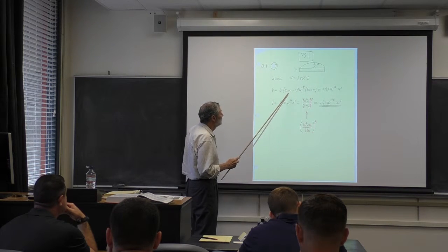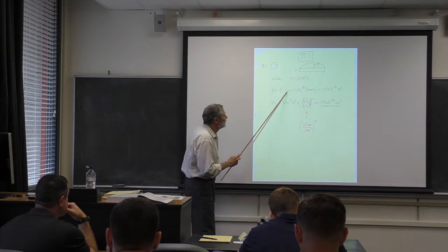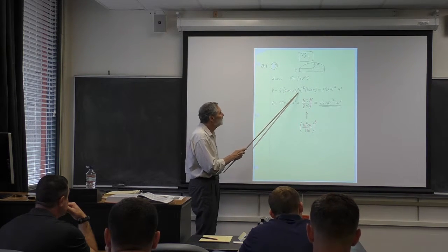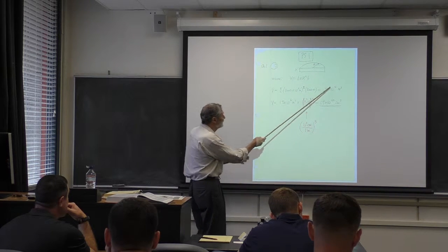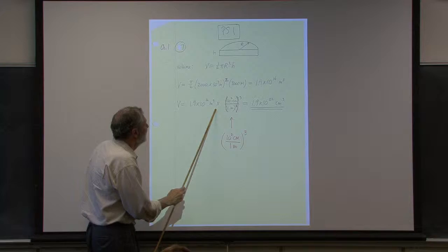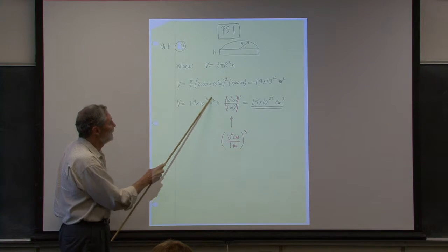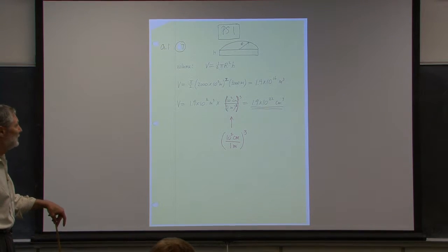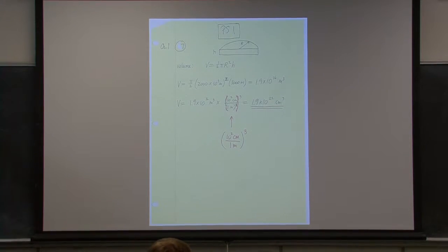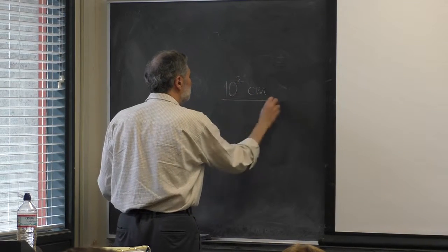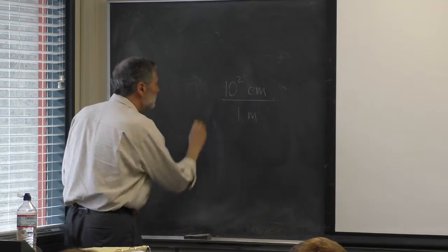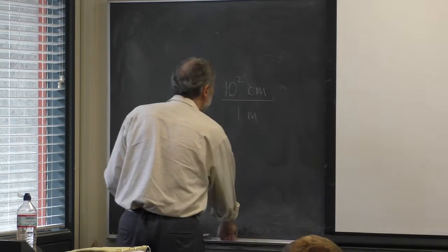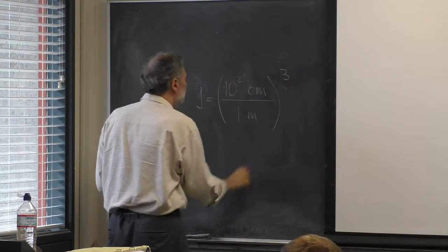Plugging in the numbers — I'm going to work in meters. The radius is 2,000 km, which is 2×10³ meters per km. The thickness is 3,000 meters. I punch this in and get the volume. Now I need to convert to cubic centimeters. I multiply by 1, choosing the conversion factor: 100 centimeters per meter. Since I have three powers of meters, I need to cube that conversion factor.